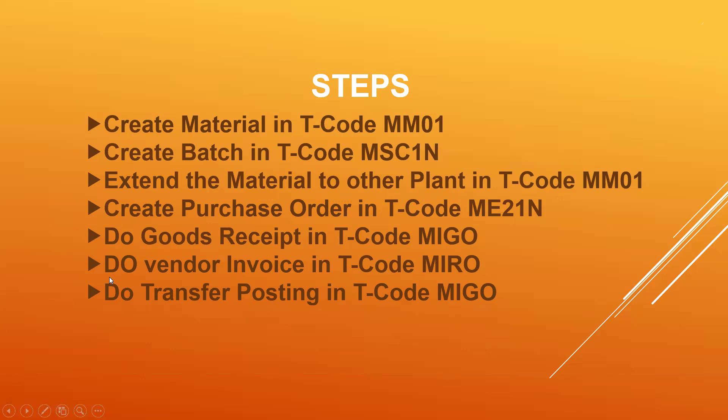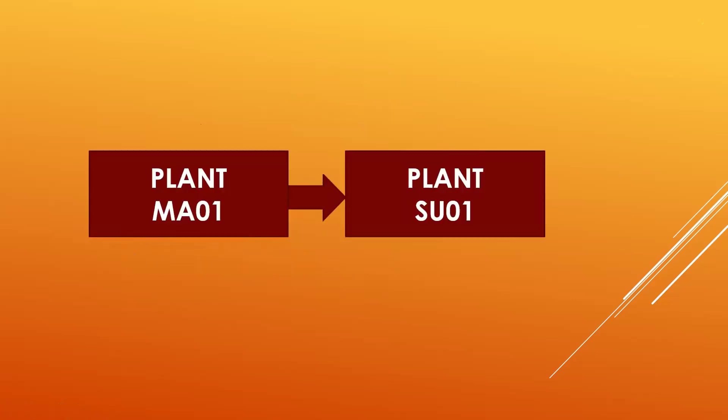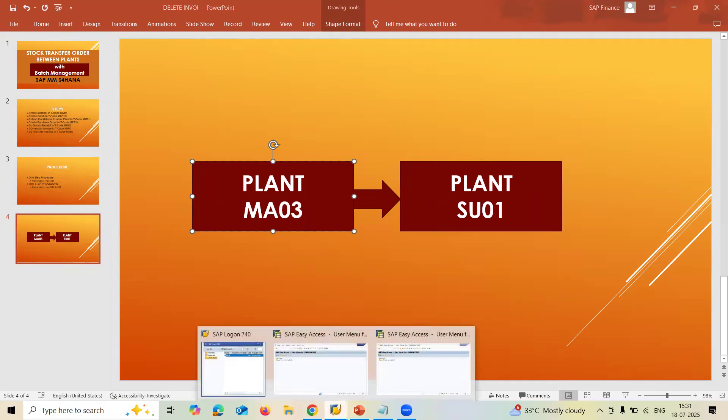There are two procedures: a one-step procedure and a two-step procedure. The one-step procedure uses movement type 301. The two-step procedure uses movement types 303 and 305 — 303 puts stock into transit, and 305 is used to receive the material with the batch. The plant is MA03, and we are transferring from MA03 to SU01 plant.